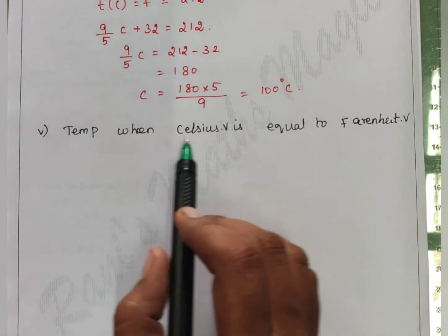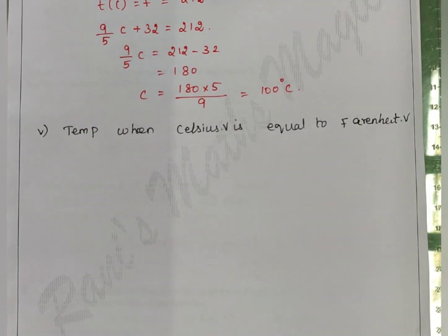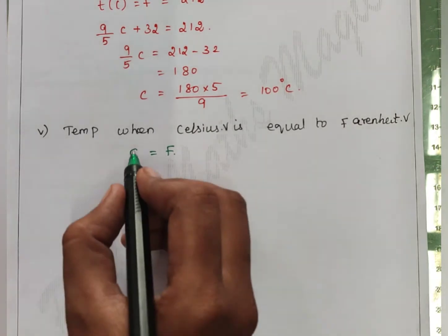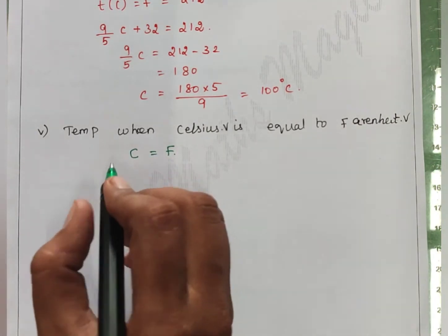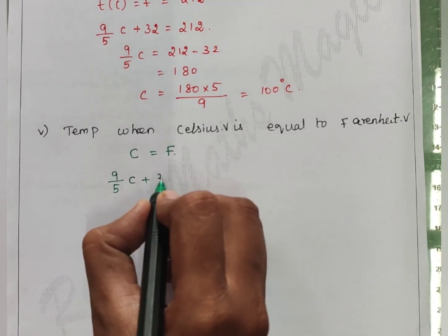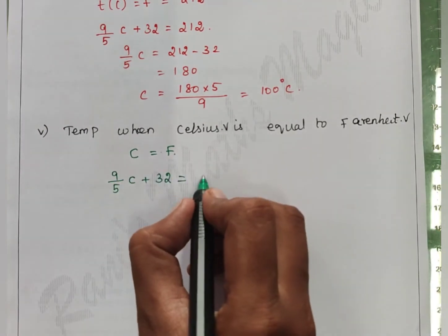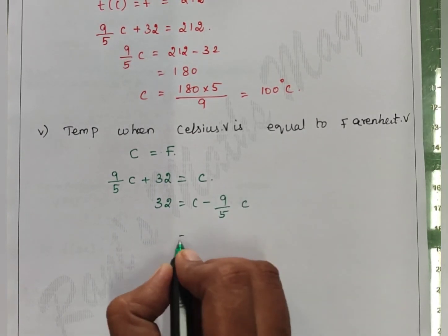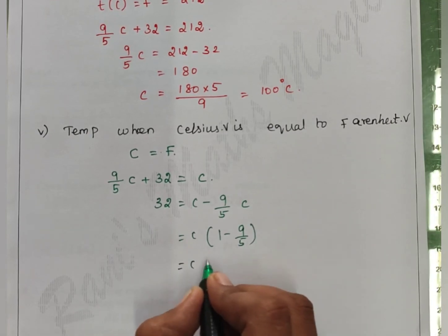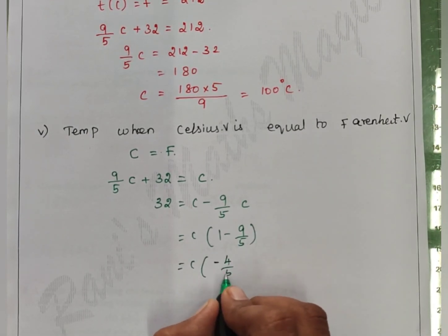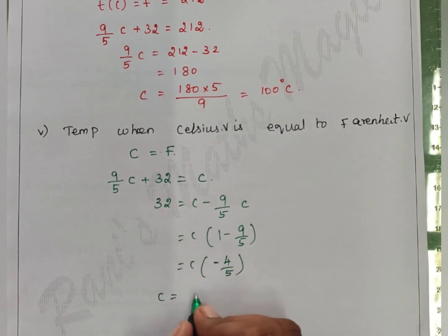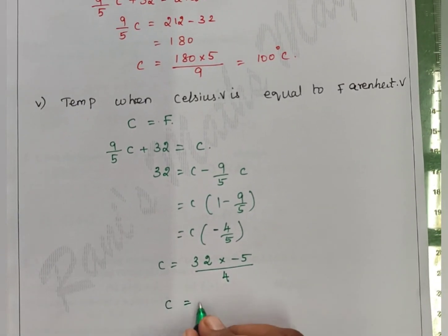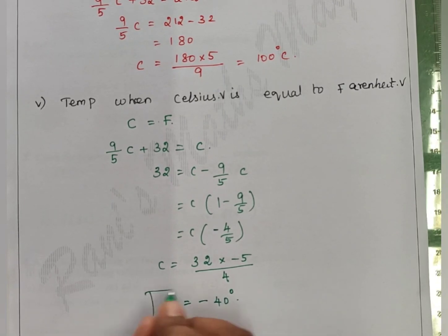Find the temperature when the Celsius value equals the Fahrenheit value. Setting C equal to F: C minus 9 by 5 C equals 32, so C times negative 4 by 5 equals 32. C equals 32 into minus 5 divided by 4, giving minus 40 degrees Celsius.